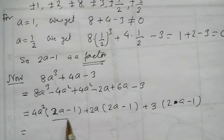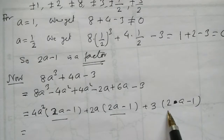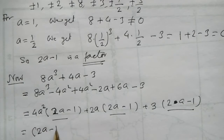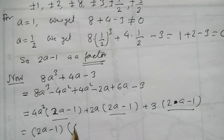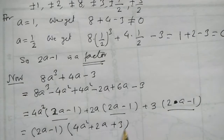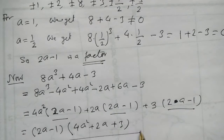Now collecting the (2a minus 1) terms, we get the quotient 4a squared plus 2a plus 3. So the factorized form is (2a minus 1)(4a squared plus 2a plus 3). This is our answer.